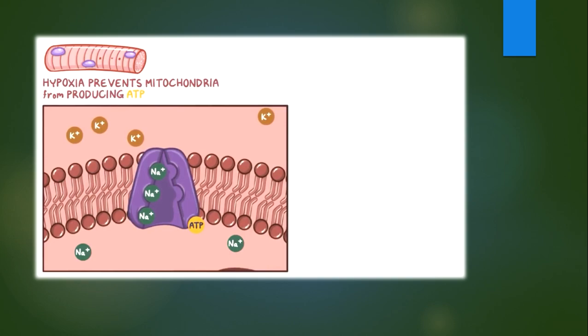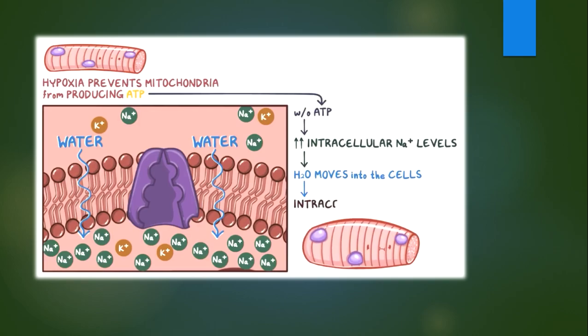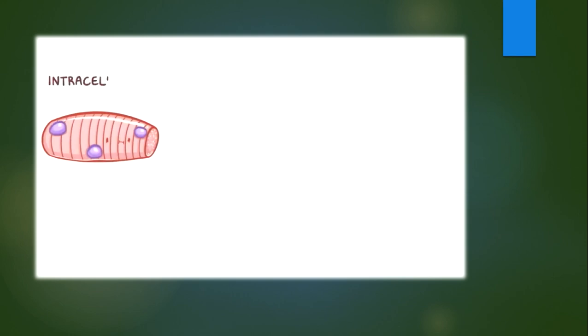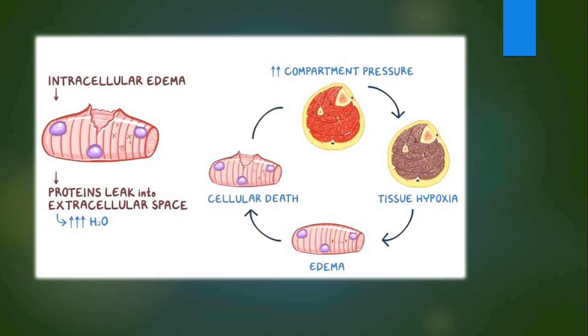Let's look at the muscle cells. Hypoxia prevents their mitochondria from producing adenosine triphosphate, or ATP, which is the cell's main source of energy. Inside the cell membrane is a sodium-potassium pump that needs ATP in order to pump sodium out of the cell and potassium inside. So without ATP, there's an increase in intracellular sodium levels, which cause water to move into the cells, causing intracellular edema. If hypoxia lasts too long, intracellular edema can lead to cell membrane rupture, causing proteins to leak out into the extracellular space. These proteins draw more water from the capillaries, and we get a vicious cycle of increased compartment pressure, tissue hypoxia, edema, followed by cellular death and even more pressure.